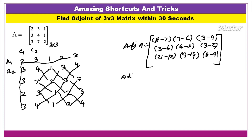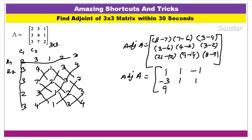Now subtracting: 8 minus 7 is 1, 7 minus 6 is 1, 3 minus 4 is 1, 3 minus 6 is 3, 4 minus 3 is 1, 3 minus 2 is 1, 21 minus 12 is 9, 9 minus 14 is 5, 8 minus 9 is 1. If you like and share this video, subscribe to the YouTube channel.